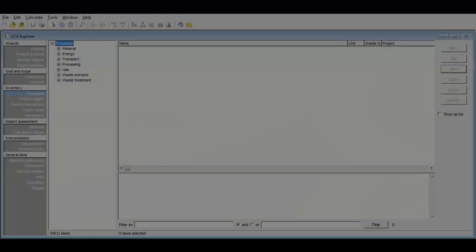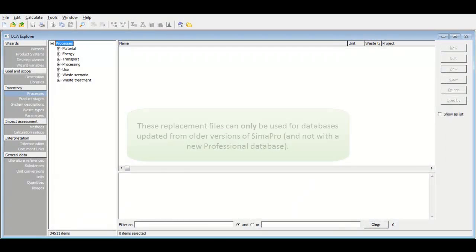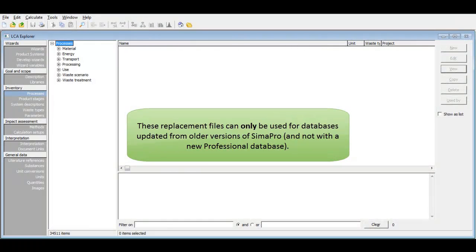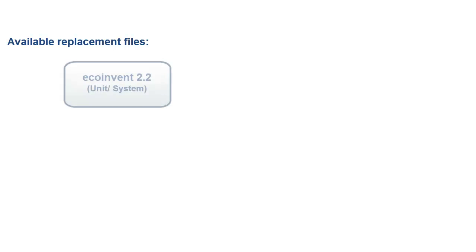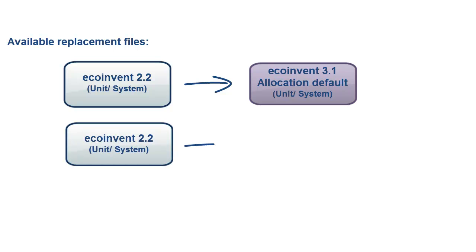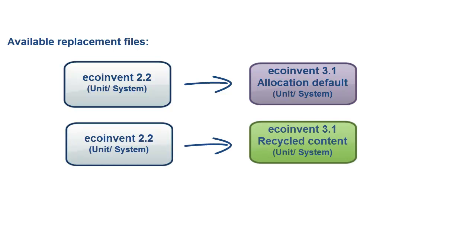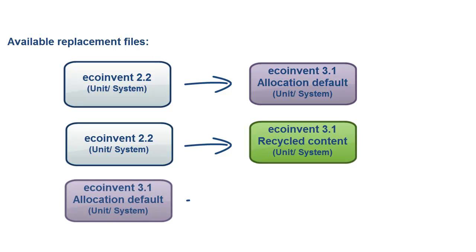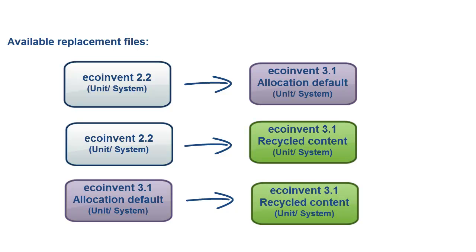Prey created special replacement files for Ecoinvent libraries to allow you to change links to your preferred library. There are currently 3 replacement files developed that can allow you to switch from Ecoinvent 2.2 to Ecoinvent 3.1 Allocation Default, Ecoinvent 2.2 to Ecoinvent 3.1 Allocation Recycled Content, and from Ecoinvent 3.1 Allocation Default to Ecoinvent 3.1 Allocation Recycled Content.